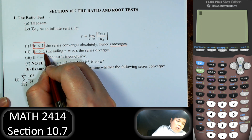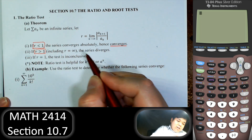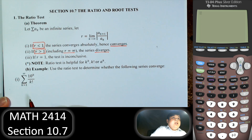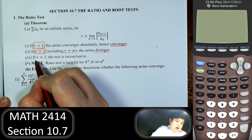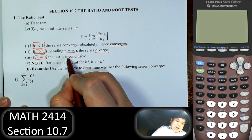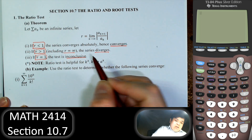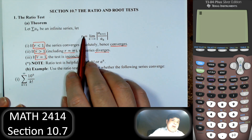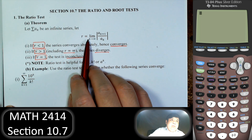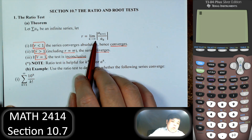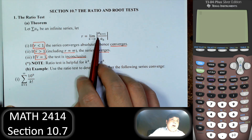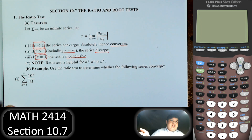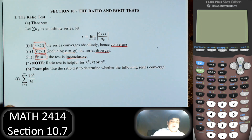If r is greater than 1, including infinity, the series diverges. When r equals 1, it is inconclusive. So we find r as the limit as k goes to infinity of the ratio of consecutive terms in absolute values — the next term divided by the current term.